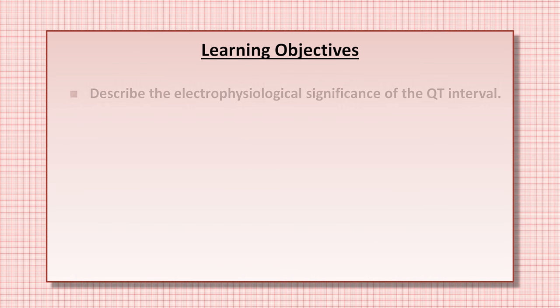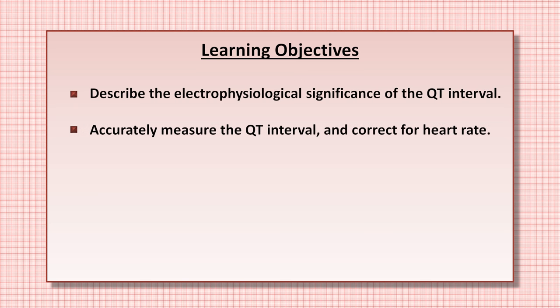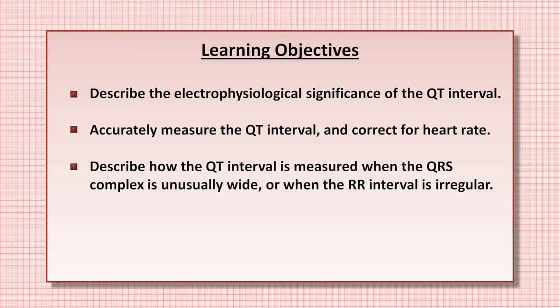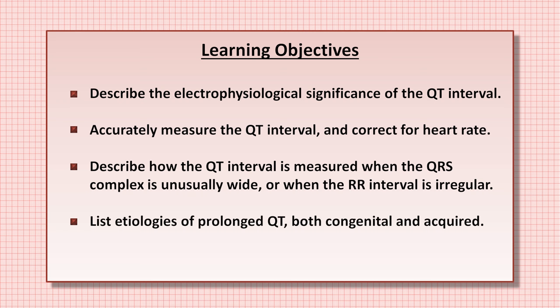After the video, you should be able to describe the electrophysiological significance of the QT interval, accurately measure the QT interval and correct for heart rate, describe how the QT interval is measured when the QRS complex is unusually wide or when the RR interval is irregular, list etiologies of prolonged QT both congenital and acquired, and describe and identify the potentially fatal arrhythmia torsade de pointe.